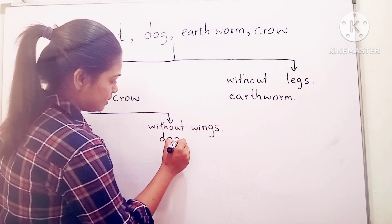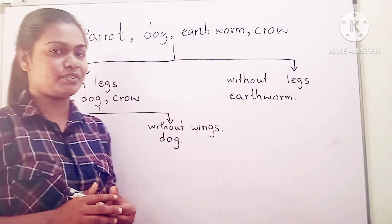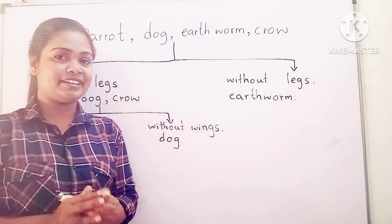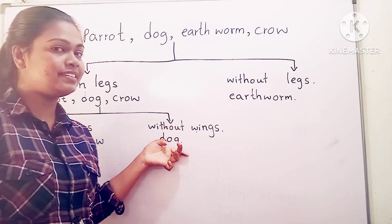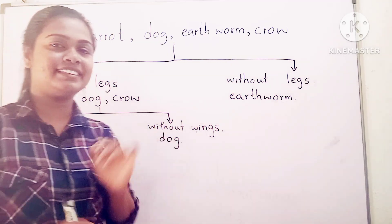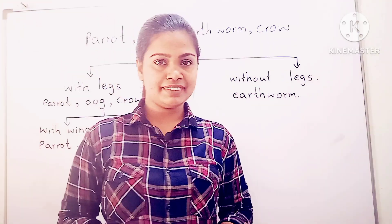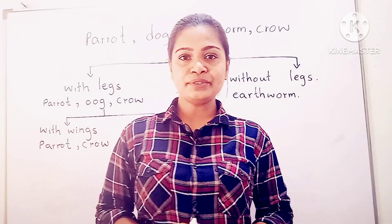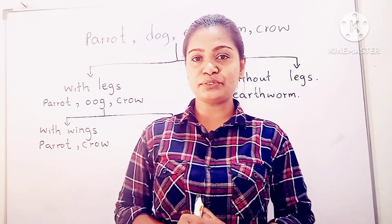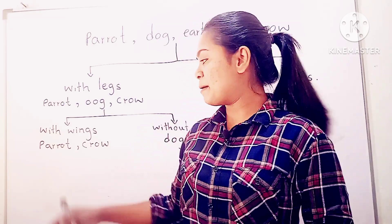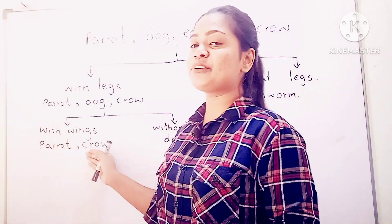The remaining animal without wings is the dog. Now, think about the remaining two animals: parrot and crow.